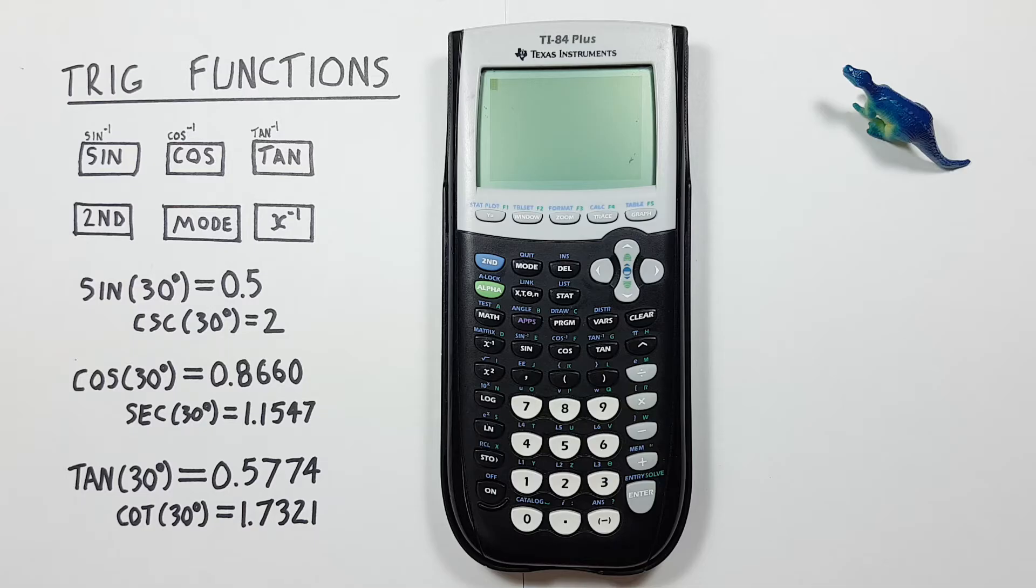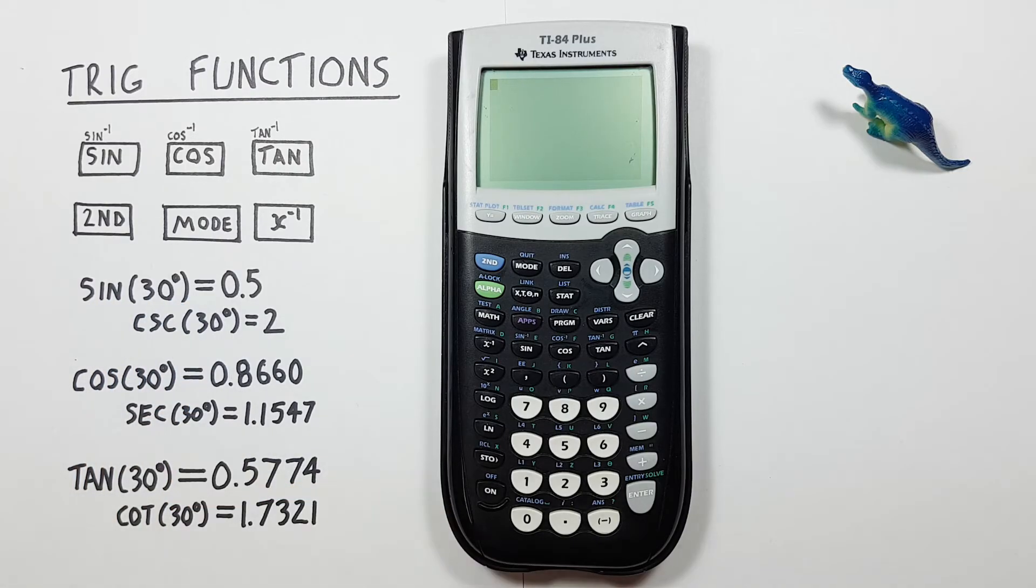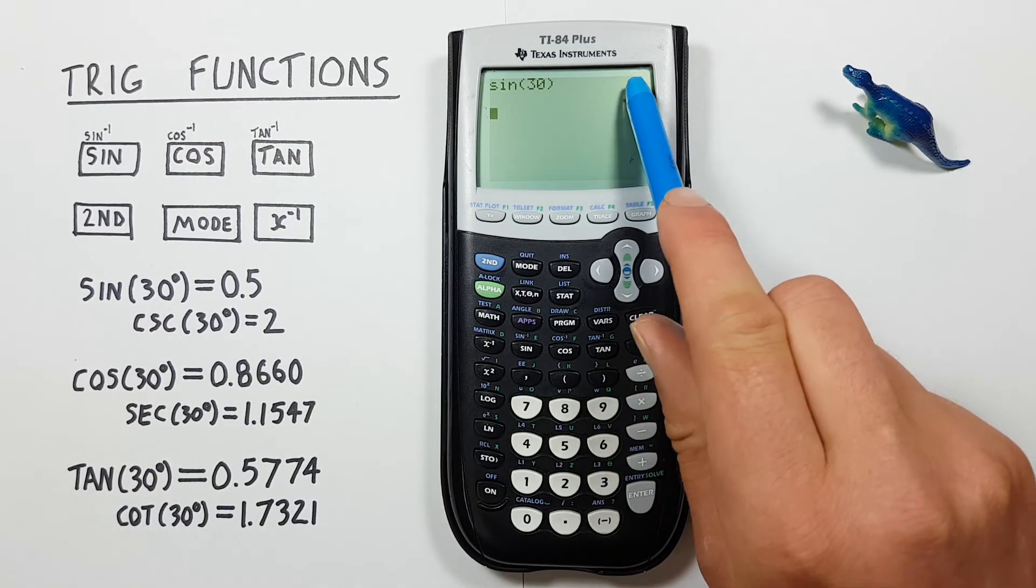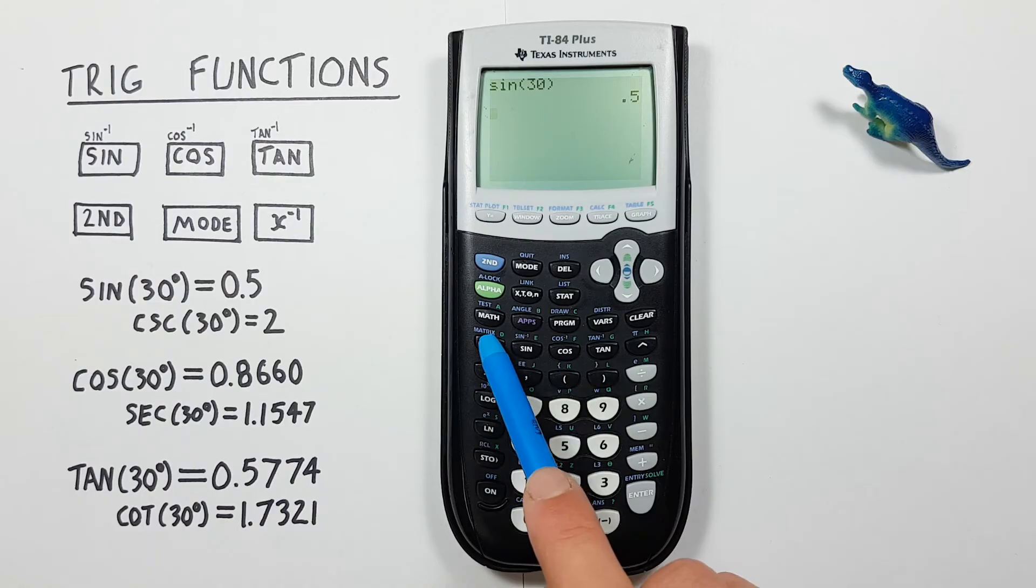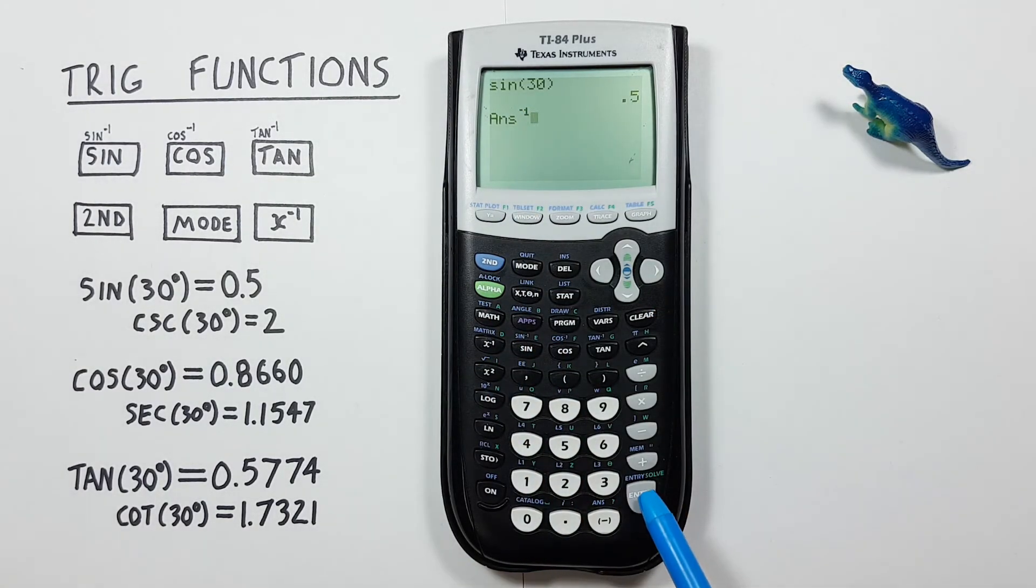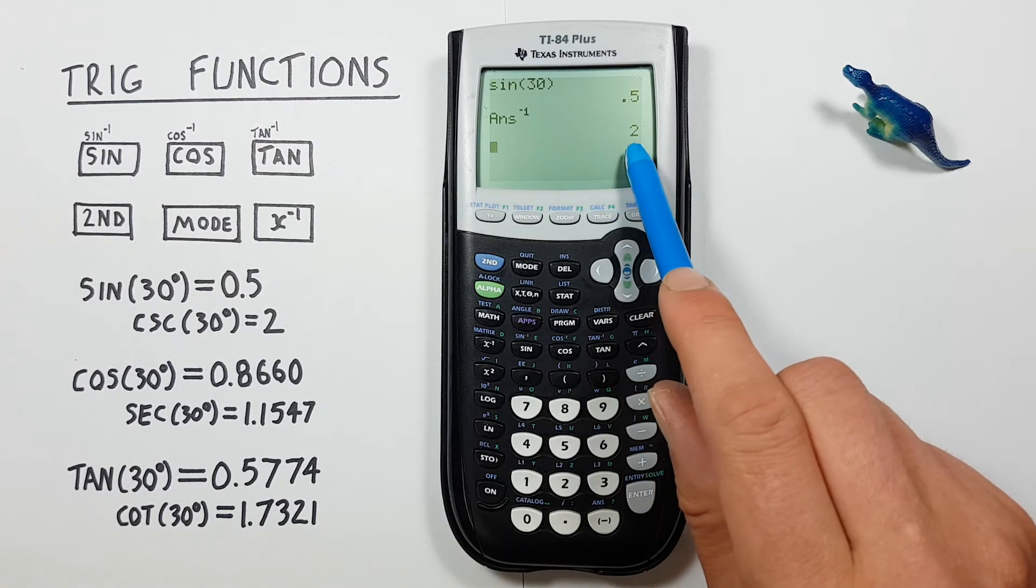We can also find cosecant, secant, and cotangent on this calculator. To do that we have to inverse the corresponding sine, cosine, or tan function. So for example, if we wanted to find the cosecant of 30 degrees, we have to use sine. So we start by entering the sine of 30 like we did before. And if we hit enter, that gives us 0.5. And then we want to inverse this with the inverse key. That's this one here, the x to the power of negative one. So we go answer inverse, press enter, and see we get a result. Cosecant of 30 is equal to 2.